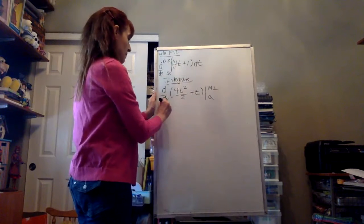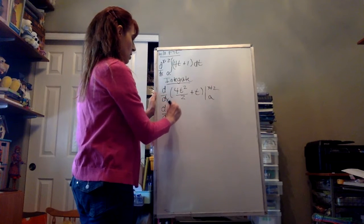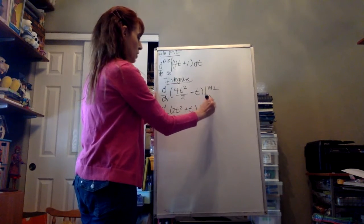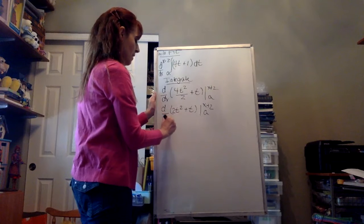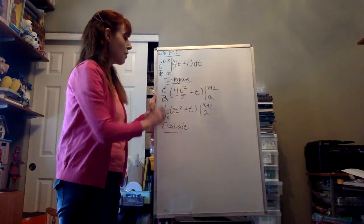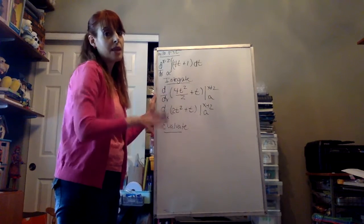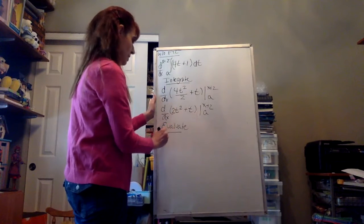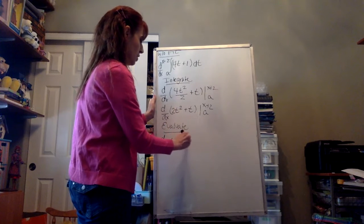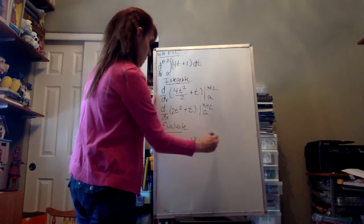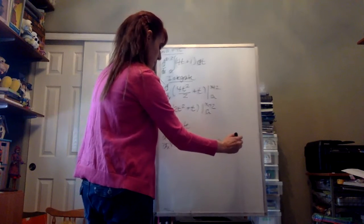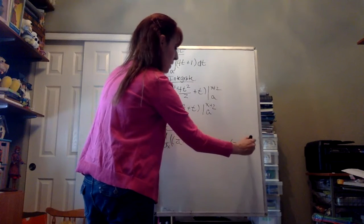Let's simplify. We have: take the derivative of 2t² + t, evaluated from a to x+2. Our second step is to evaluate — we plug in x+2 everywhere we see a t, plug in a everywhere we see a t, and subtract the a parts from the x+2 parts. So we have, still need to take the derivative, that would be 2(x+2)² + (x+2), and then subtract 2a² + a.